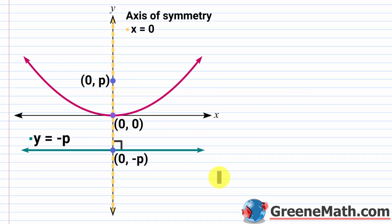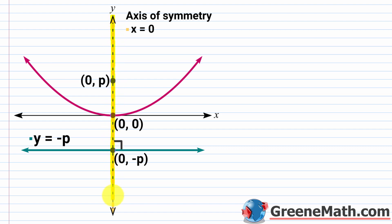We have a vertical parabola that opens up with its vertex at the origin. The axis of symmetry is x equals zero, which is the y-axis — this cuts the parabola into two equal halves. From the definition, this axis of symmetry passes through a fixed point called the focus and is perpendicular to the fixed line called the directrix. The focus is at the point zero comma p, and I'll explain what this lowercase p means in a moment.